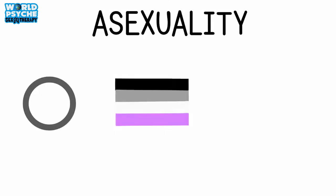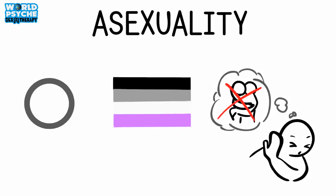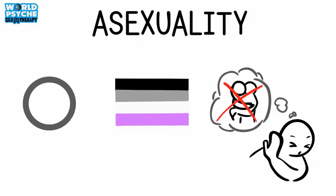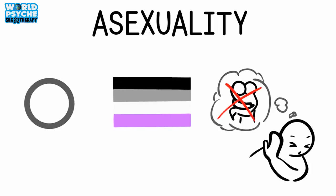6. Asexuality. Asexuality is one of the lesser-known sexualities. It refers to someone who doesn't experience sexual attraction to any gender. This doesn't mean, however, that they never have relationships or sex, which are common myths about asexuality. Bojack Horseman, the TV show, explores asexuality through one of the major characters, Todd Chavez.